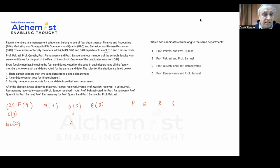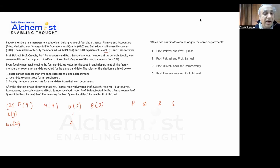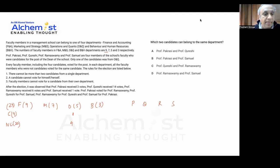The rules are: there cannot be more than two candidates from a single department; a candidate cannot vote for himself or herself; and faculty members cannot vote for a candidate from their own department — so they will not vote for anyone from their own department.